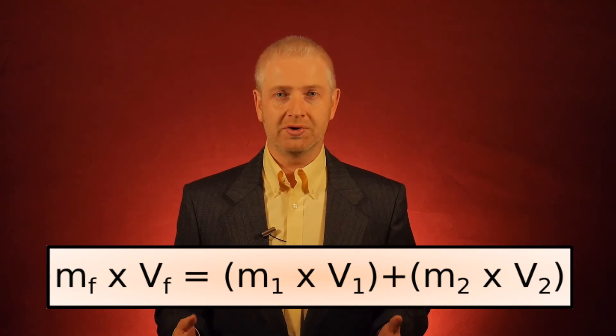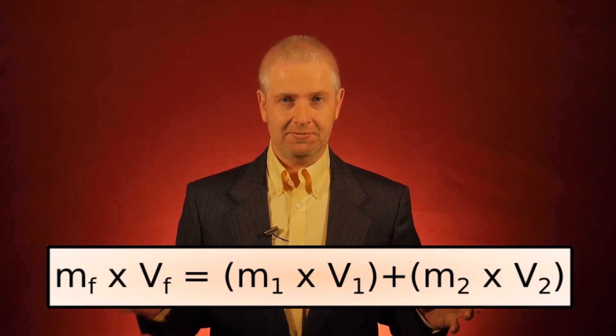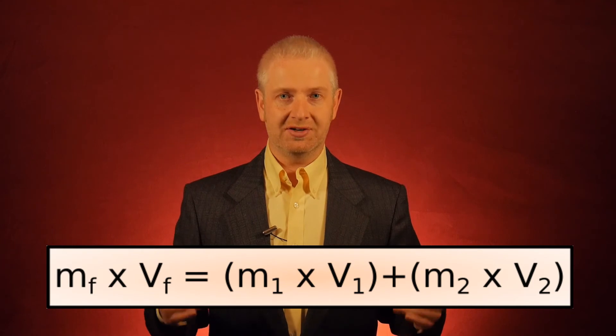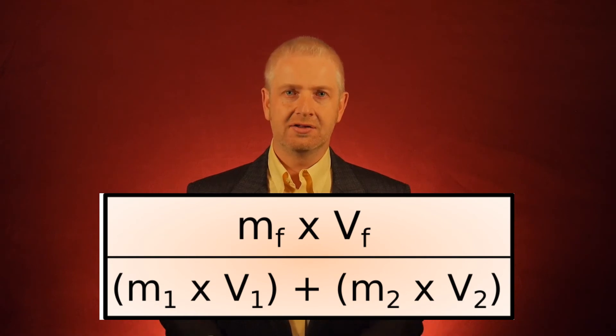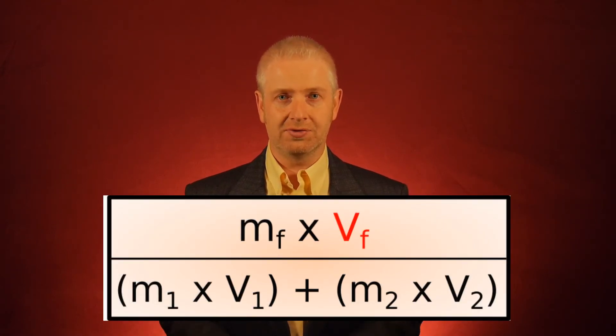Okay. So as before, what we do is we take those separate parts of the equation and put them on different lines of the equation square. So suppose I wanted to find the final velocity, Vf. Let's look at my two rules. Rule number one: is anything else added to or subtracted from it? No.